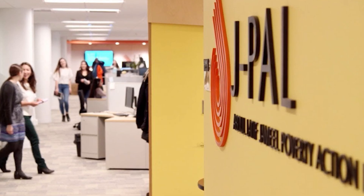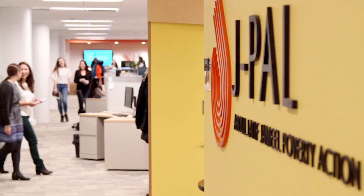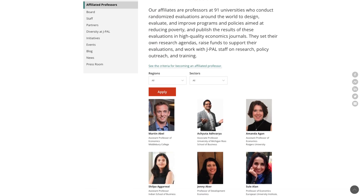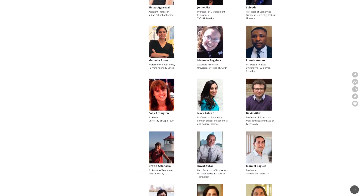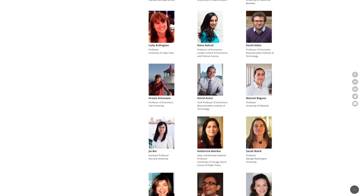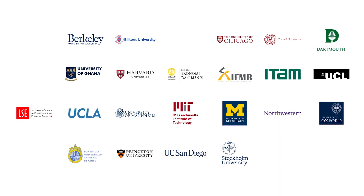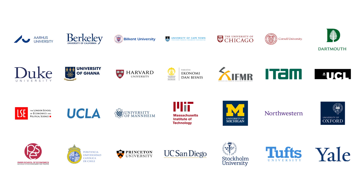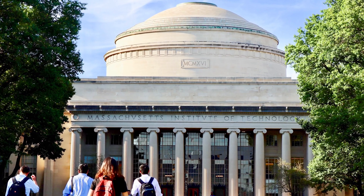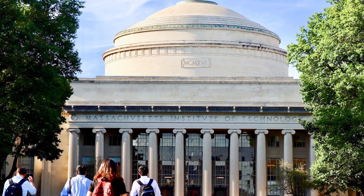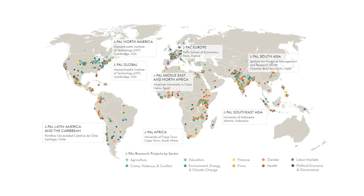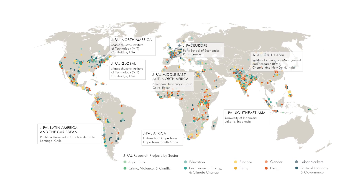J-PAL is a global research center working to reduce poverty by ensuring that policy is informed by scientific evidence. A network of 600-plus researchers are based at dozens of universities around the world and conduct randomized impact evaluations to answer critical questions in the fight against poverty. And while I'm greeting you from our global office here on the campus of MIT in Cambridge, USA, we have regional offices and staff in a dozen countries.